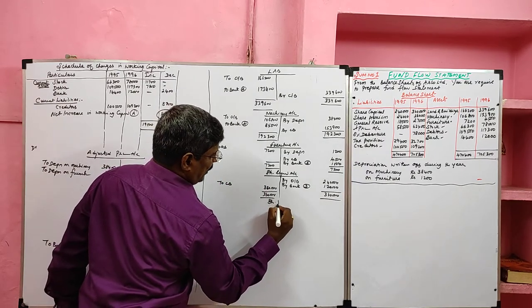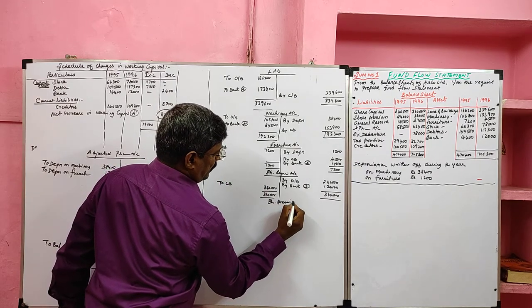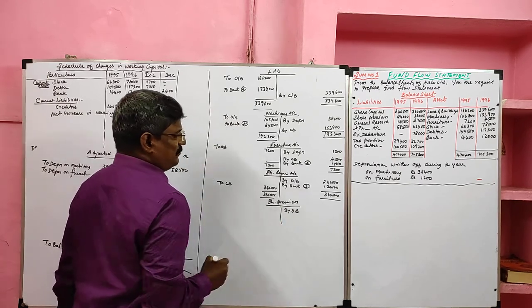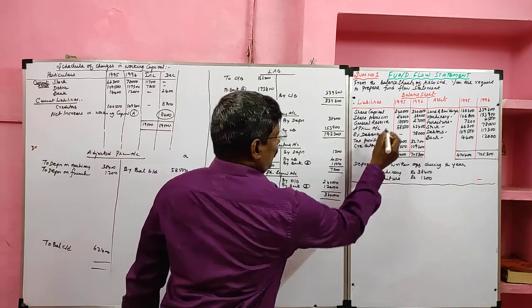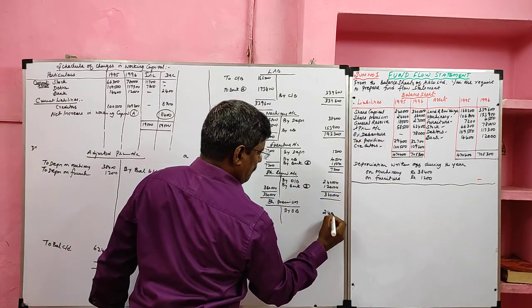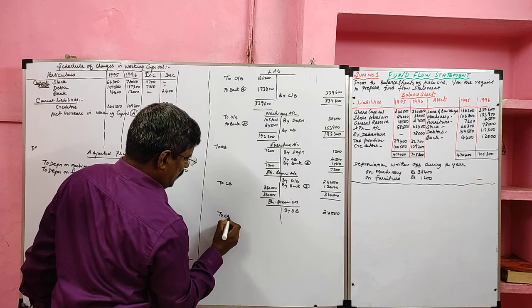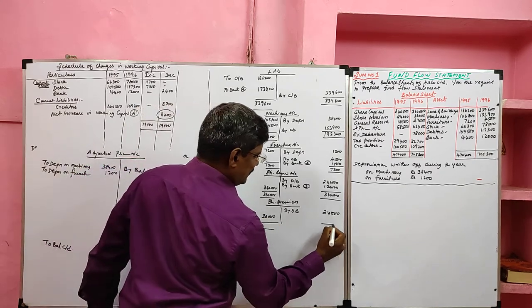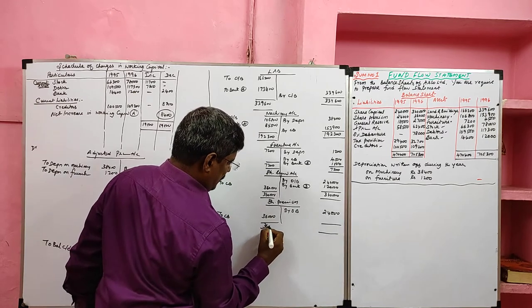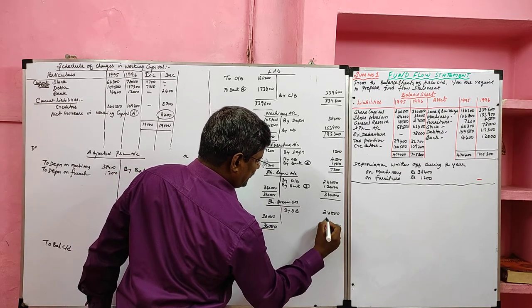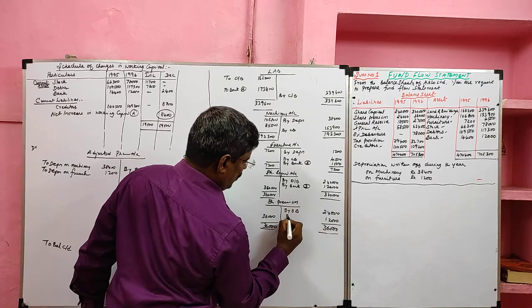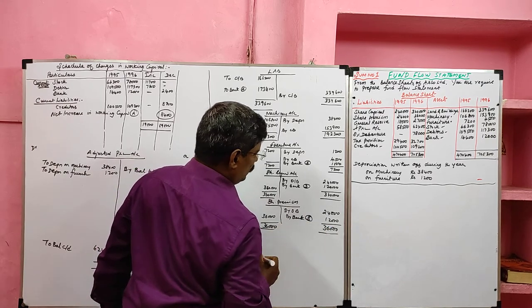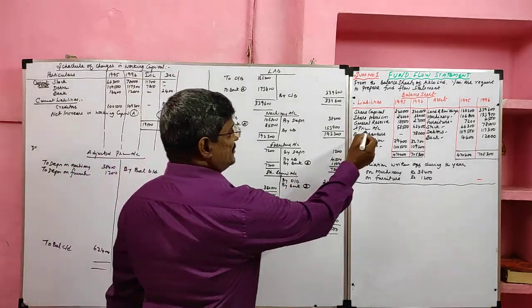Share premium: opening balance credited 24,000, closing balance debited 36,000. Balancing shows a credit side balance of 12,000, which represents collection of share premium — it goes to the sources side.